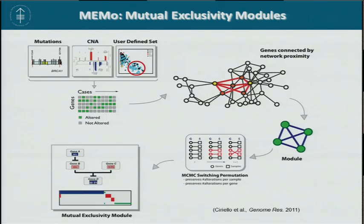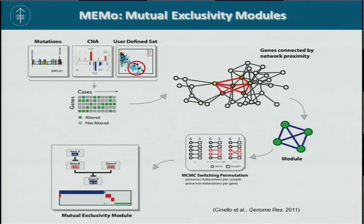To systematically identify genes that are frequently altered in a mutually exclusive way, we developed a method called MIMO, which stands for Mutual Exclusivity Modules. MIMO integrates somatic mutation and copy number alteration, and allows the user to specify a set of alterations for one or more genes — for example, to include BRCA1 hypermethylation.